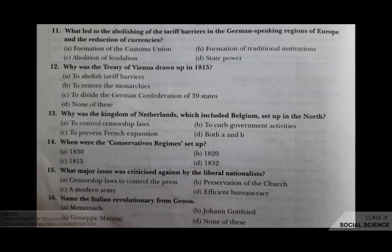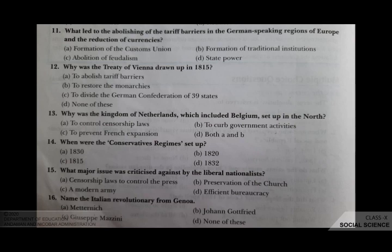What major issue was criticized by the liberal nationalists? Your options are A censorship laws to control the press, B preservation of the church, C a modern army, D efficient bureaucracy. The correct answer is A, censorship laws to control the press.